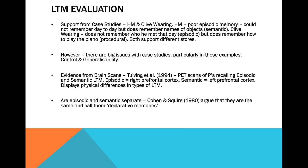Finally, there is some contradictory research. Cohen and Squire agree that there are different types of long-term memory, but they only split it into declarative and non-declarative memory. They argue that episodic and semantic memories are both declarative, essentially clumping them together, while procedural memory is non-declarative. So for Cohen and Squire there are only two types of long-term memory. This is an evaluative point because it raises the question: how do we divide long-term memory, and who has it right — Tulving or Cohen and Squire? It's difficult to know.